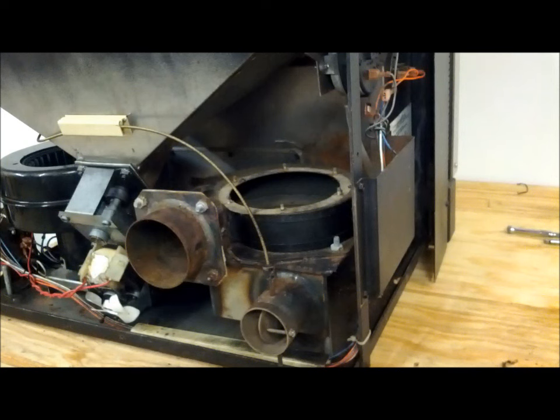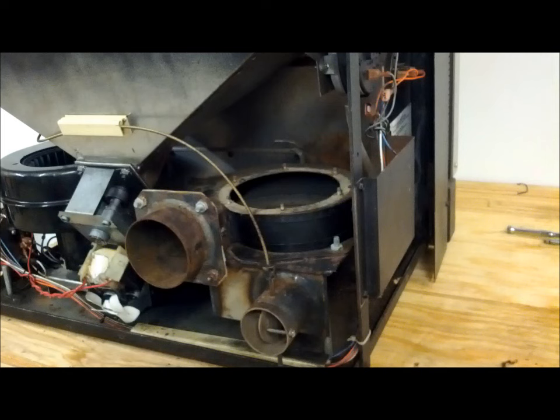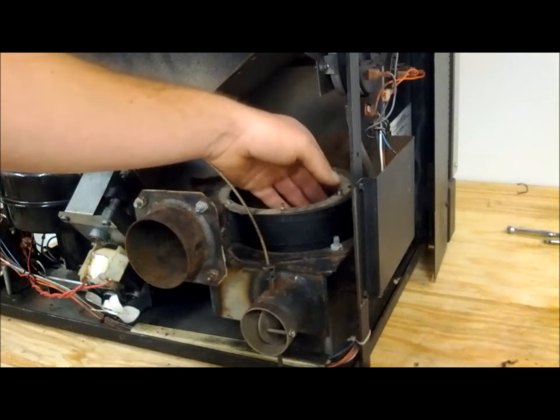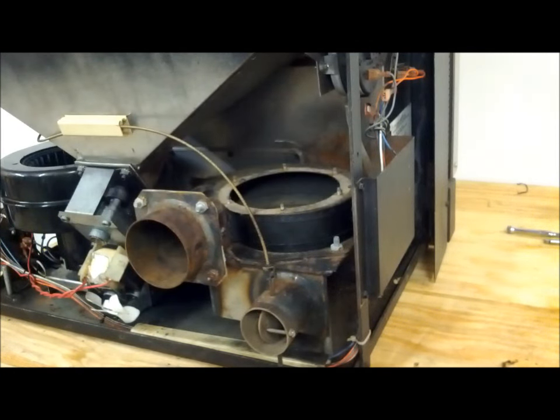Then take degreaser, spray it onto a rag, and wipe it down. Take another dry rag and dry it. Then spray it down with CRC dry graphite lube. That'll fill in any little rust pits and make it a smooth surface for the exhaust to flow out nicely. It'll also stop the soot from adhering to the inside of the housing.